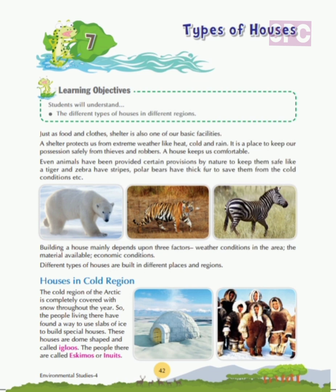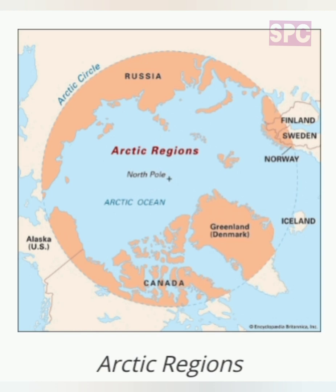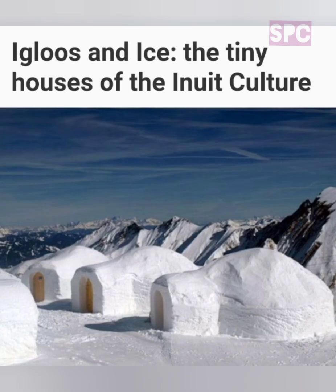Let's study about different types of houses constructed in different regions. First, houses in cold regions. The cold region of Arctic is completely covered with snow throughout the year. The people living there have found a way to use slabs of ice to build special houses. These houses are dome-shaped and called igloos. The people there are called Eskimos or Inuits. Arctic is the polar region in the northernmost part of the earth, consisting of parts of Canada, Greenland, Finland, Norway, Russia, Sweden and Alaska. People residing in these areas build igloos — also referred to as snow houses — to keep themselves safe from the harsh weather and wild animals like polar bears.